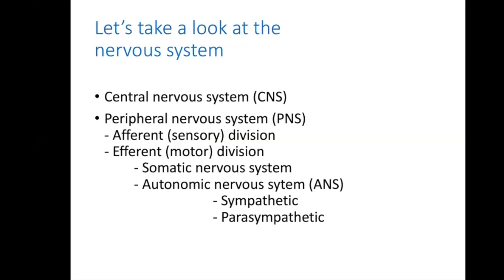The peripheral nervous system is divided into the afferent or sensory division and the efferent or motor division. This motor division is further divided into the somatic and autonomic nervous system, which is again divided into sympathetic and parasympathetic. And we know how neural transmission occurs.